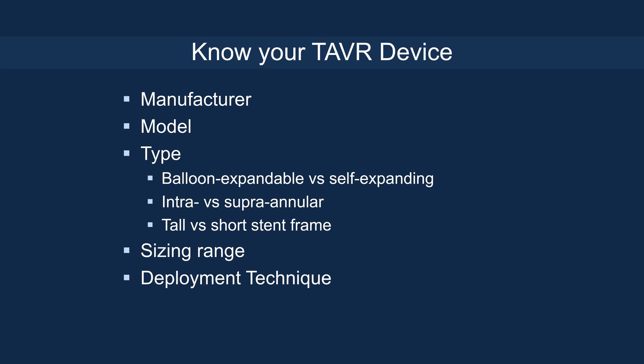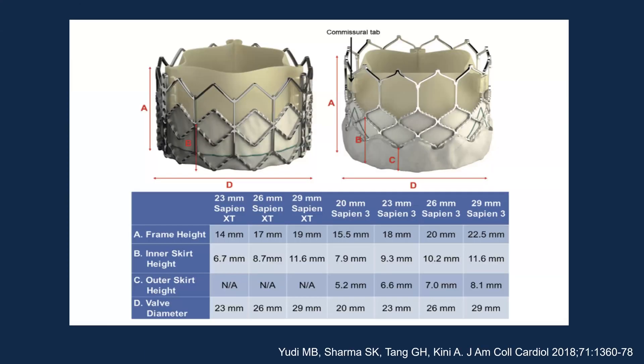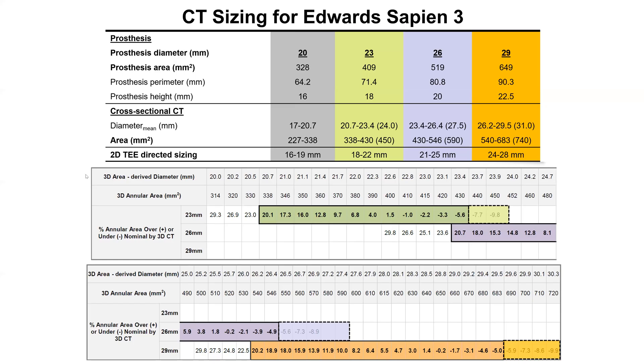To learn to do TAVR, you need to know your TAVR device: the manufacturer, the model, whether it's balloon-expandable or self-expanding, intra-annular versus supra-annular, whether they have a tall or short stent frame, the sizes and range of these devices, and what the deployment technique is. For the balloon-expandable devices — the Sapien Classic and the Sapien 3 platform — you need to know the dimensions of these valves based on size and the sizing chart in terms of treatable ranges.